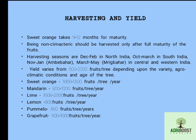Average yield of sweet orange is 1000 to 1500 fruits per tree per year. Mandarin yields 800 to 1000 fruits per tree per year. Lime yields 1500 to 2000 fruits. Lemon yields about 800 fruits. Pamelo and grapefruit each yield 500 to 1000 fruits per tree per year. Economic yield starts from the fifth year onwards, and the tree may take 8 to 10 years to achieve full productivity.